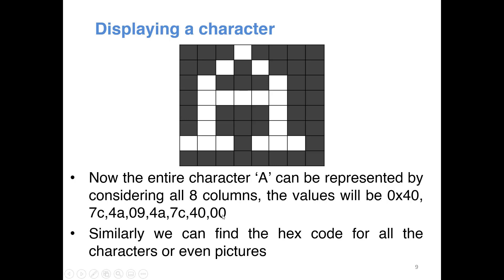To display the entire character 'A' you need to write the corresponding value for each column into the GDDRAM. The full 8x8 sequence is: 0x40, 0x4C, 0x40, 0x7C, 0x4A, 0x09, 0x4A, 0x7C — all in hexadecimal. We keep the last column and last row pixels all zero because when you have multiple characters and multiple lines, leaving some black pixels lets you distinguish between characters and rows.